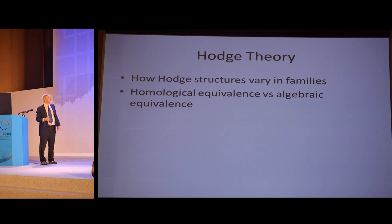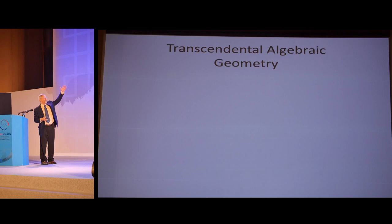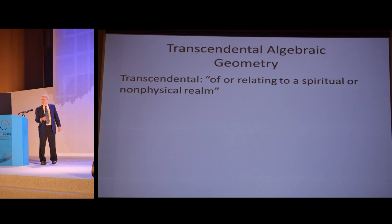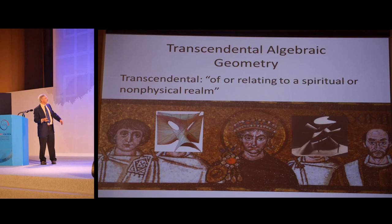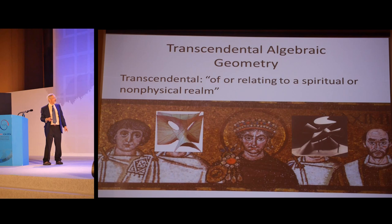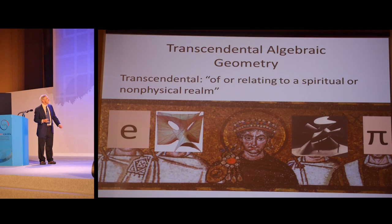In Hodge theory, there are two main things. One is going to be how Hodge structures vary in families, and one will be this homological equivalence versus algebraic equivalence that I intend to explain from the very beginning. It'll be a march into the heart of transcendental algebraic geometry, but we have to move reasonably quickly to get there. I don't know who picked this name for our field. It's a great piece of marketing. It's a wonderful word, transcendental. I sometimes picture the celestial realm with the cubic surface with its famous 27 lines here. I think that's a Kummer surface over there.